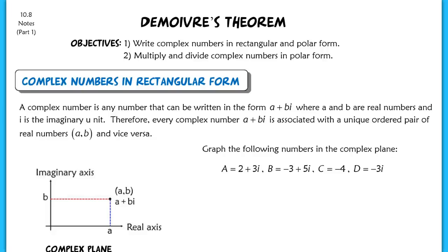This lesson is part one of section 10.8 on DeMoivre's Theorem. We're actually not going to work on DeMoivre's Theorem yet — that's going to be part two. For today, our objectives are going to be to write complex numbers in rectangular form and polar form, and also to multiply and divide complex numbers that are written in polar form.